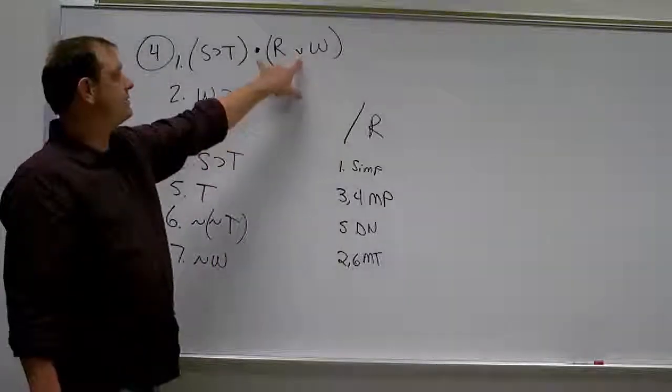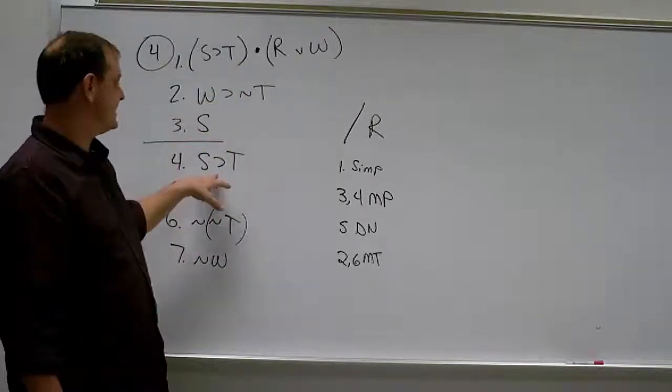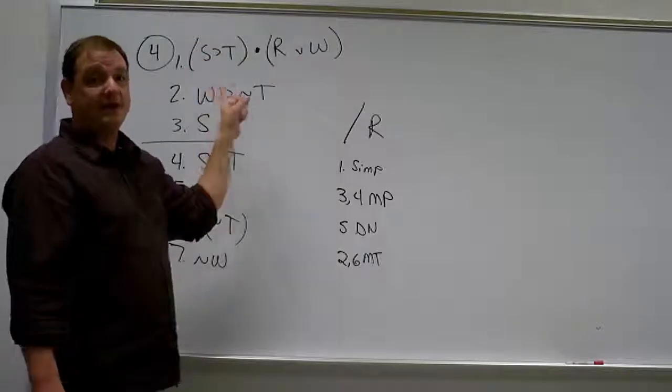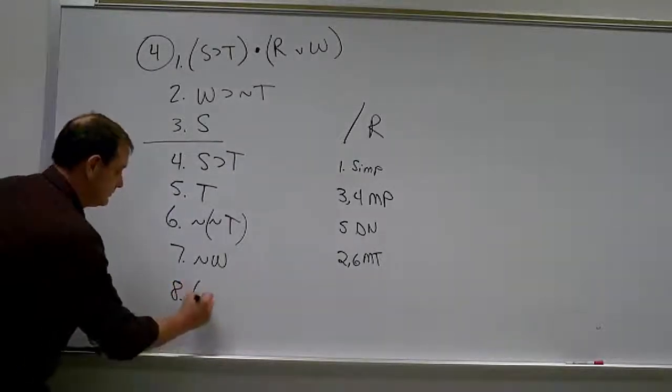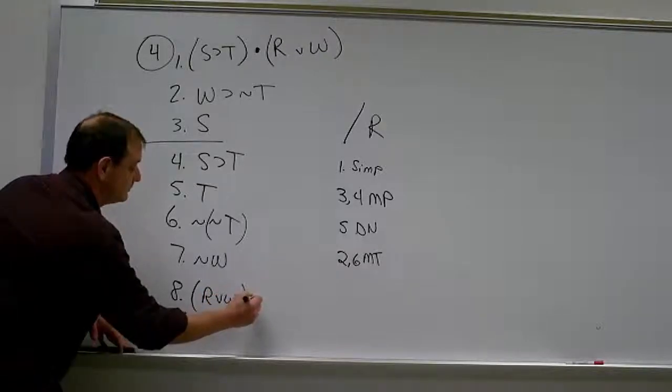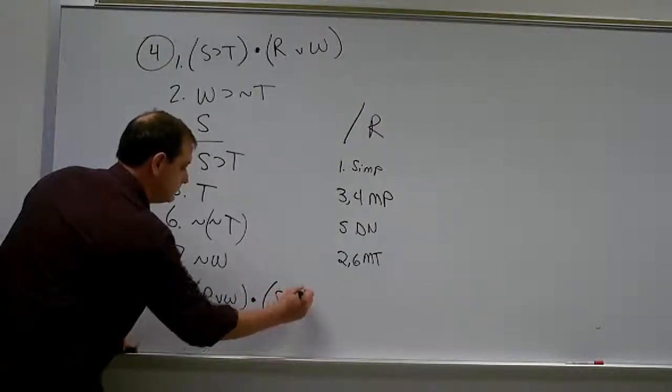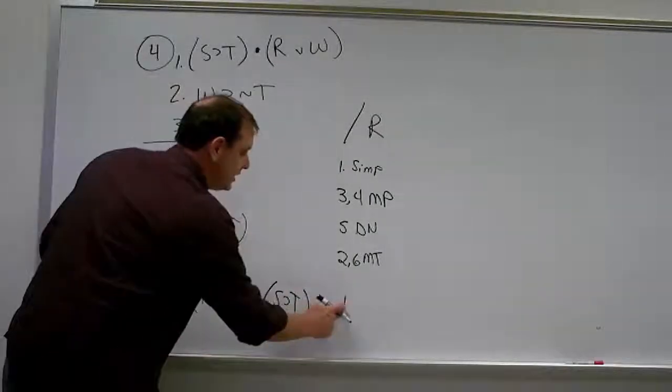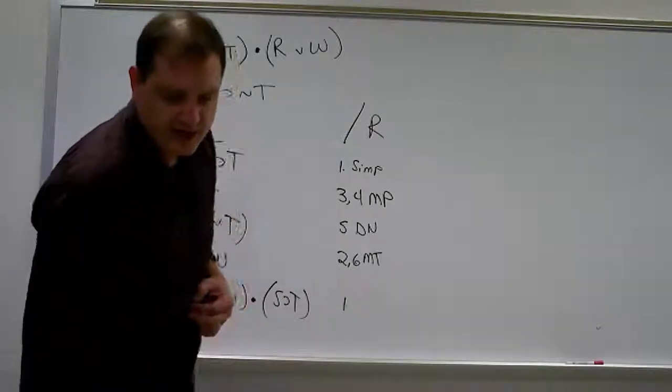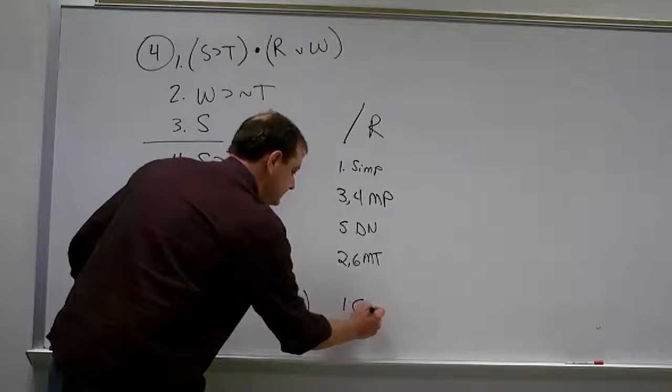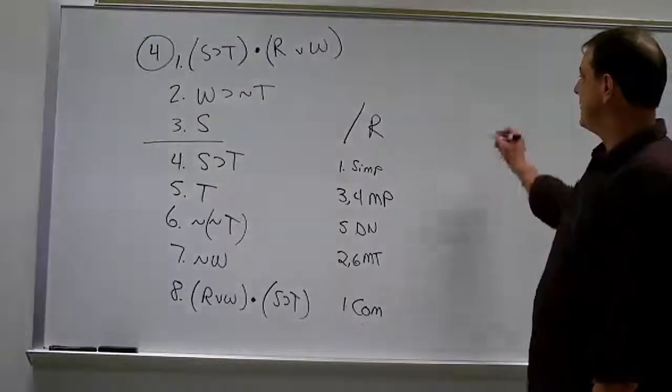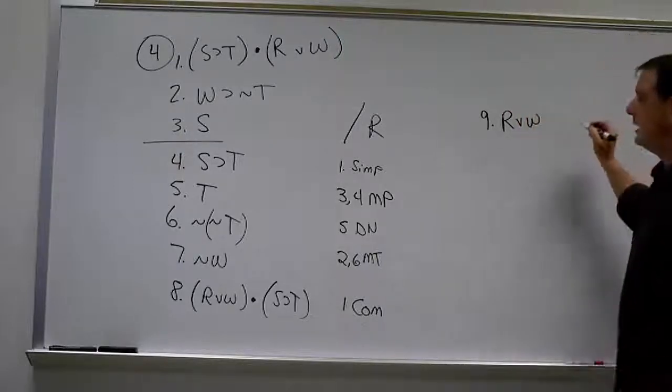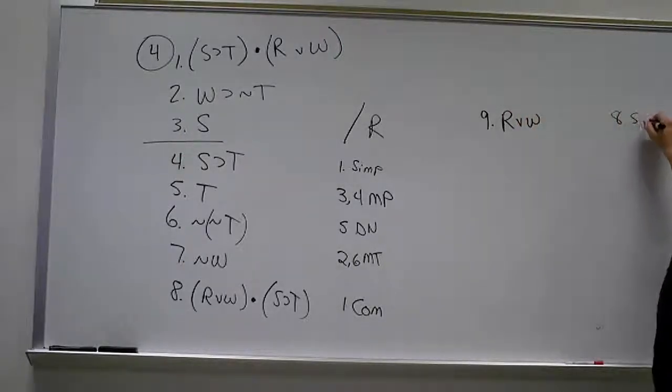But Hurley is going to require us to switch these so that we can simplify out. We already simplified out in S and T. In order to simplify this out, we're going to have to put it out front because that's what Hurley makes us do. And that comes from line 1. That's commutativity. Okay? So now we can simplify out this R or W. We'll do that. That'll become line 9. For 8, we simplify. You can see that? That's pretty close. All right.